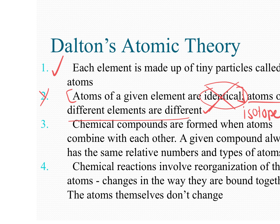Chemical compounds are formed when atoms combine with each other, and a given compound always has the same relative numbers and types of atoms — I would agree with that. That's still true today. And lastly, his theory says chemical reactions involve reorganization of atoms — they change the way they are bound together, but the atoms themselves don't change. I would agree with that as well.